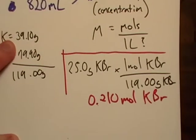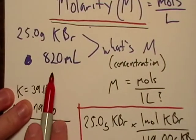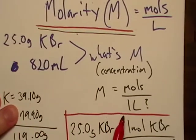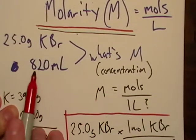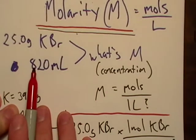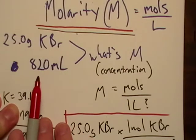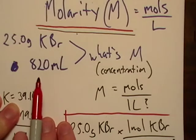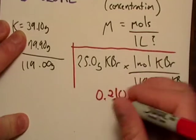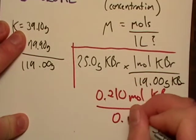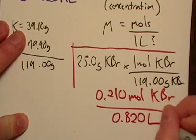So I'm gonna have moles of KBr. Okay, and just like before, the actual formula wants to go per liter. You know, we're eight tenths of a liter would be 0.8 liters, but this is just 0.820.